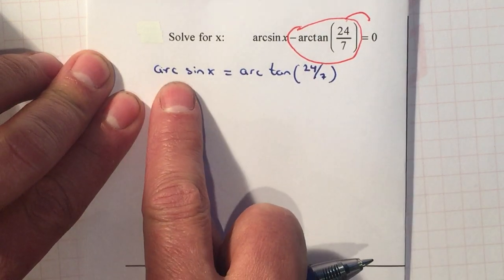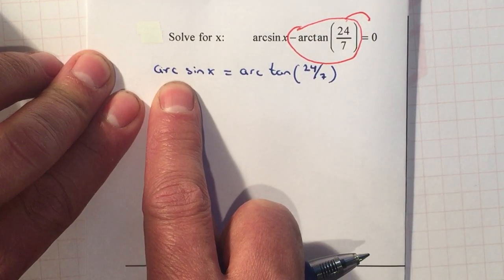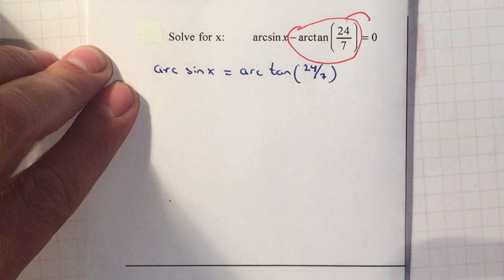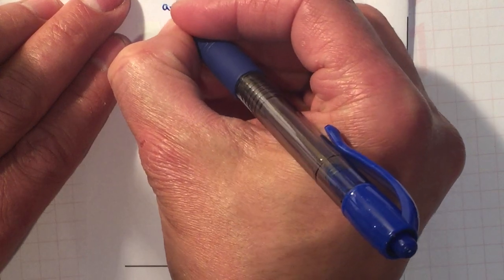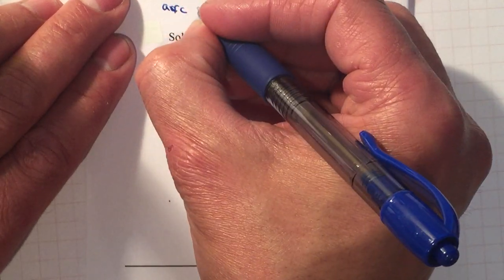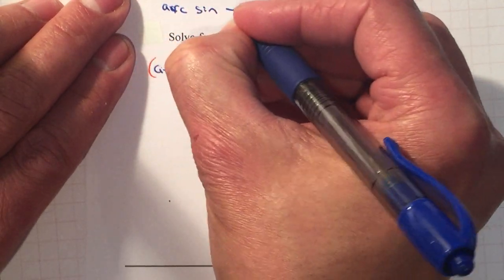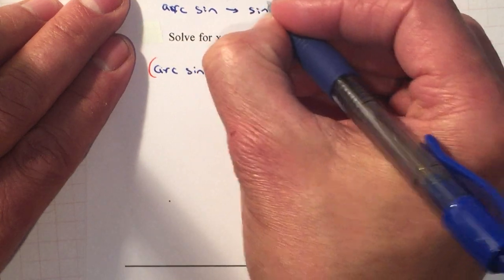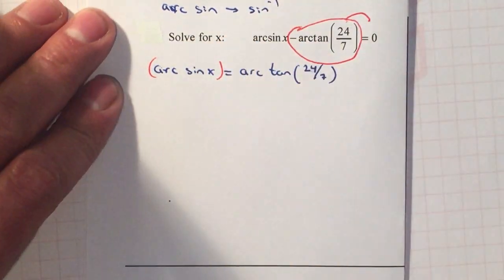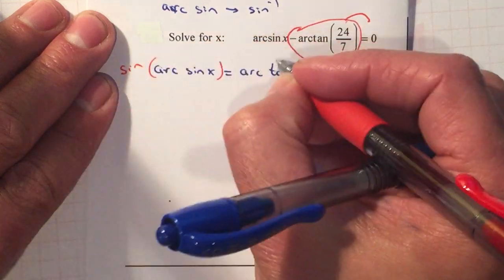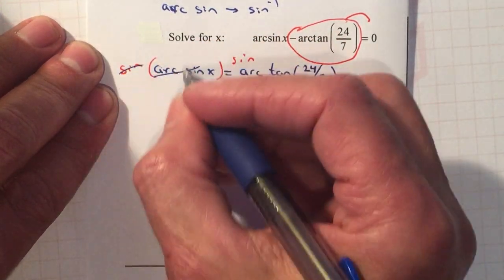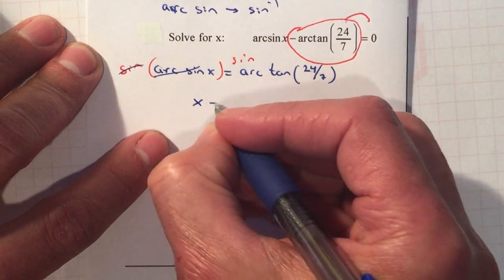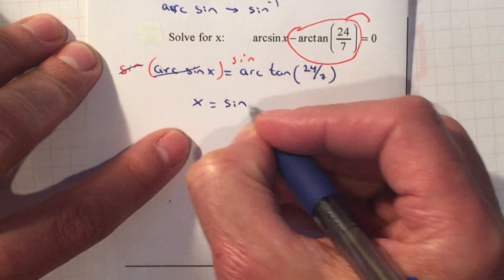Now to get rid of the arc sine, I'm gonna take the sine on both sides. Remember, arc sine—whenever you see arc sine or arc tangent—it's the same thing as sine inverse. So to get rid of the inverse, you take the sine on both sides. The arc sine and the sine cancel each other out; they're reciprocals of each other.